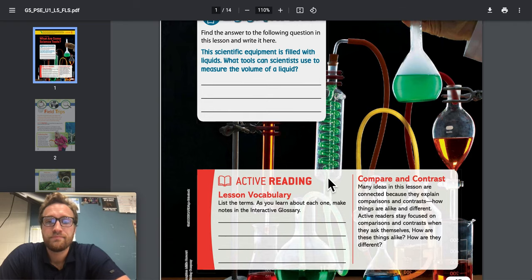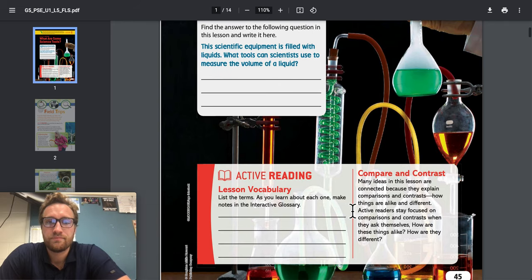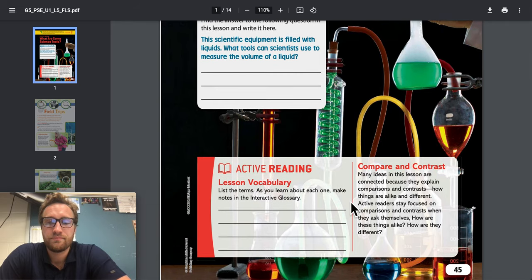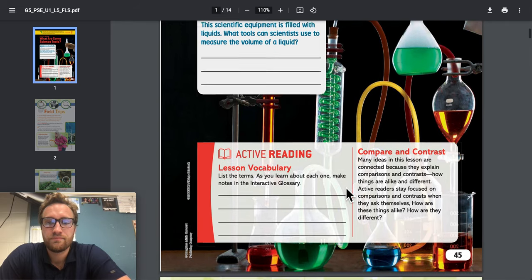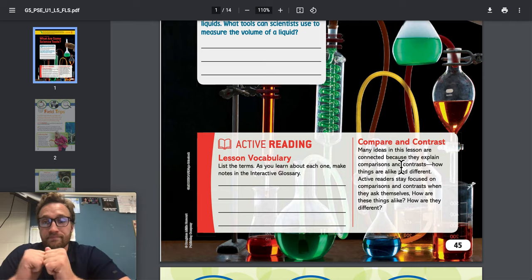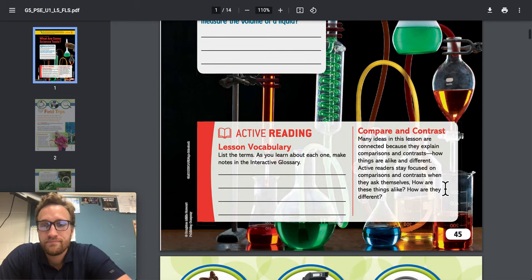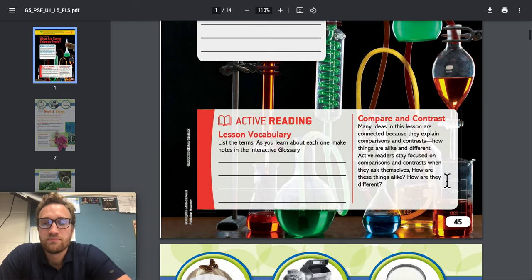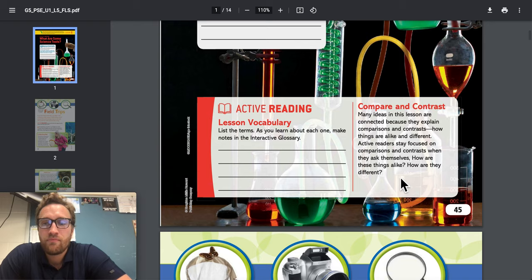Active reading. Lesson vocabulary: List the terms. As you learn about each one, make notes in the interactive glossary. Compare and contrast. Many ideas in this lesson are connected because they explain comparisons and contrasts, how things are alike and different. Active readers stay focused on comparisons and contrasts when they ask themselves, how are these things alike? How are they different?